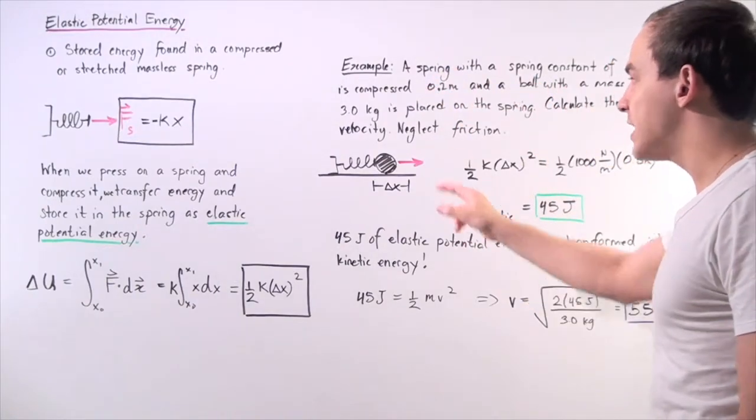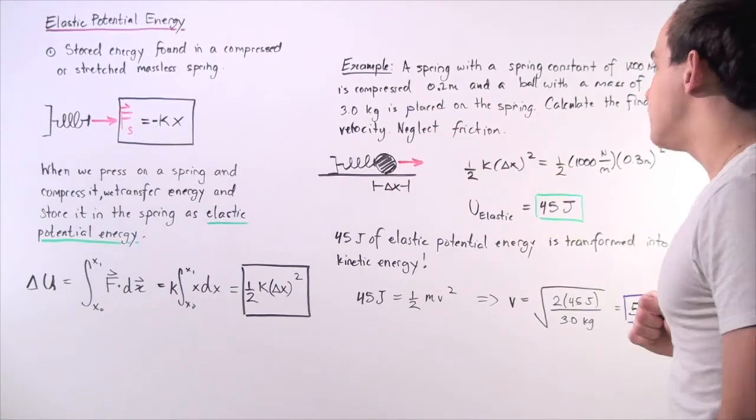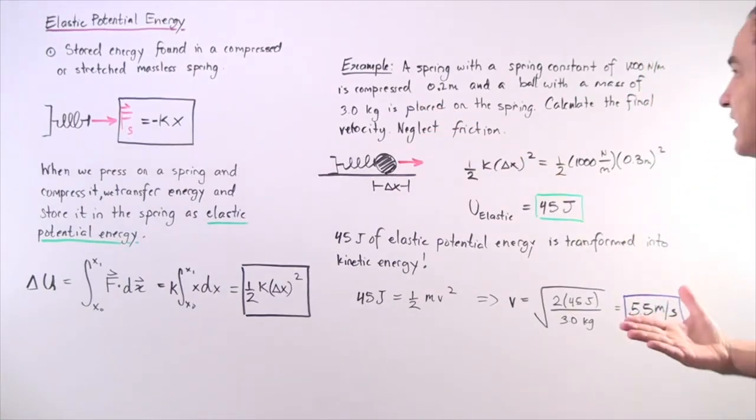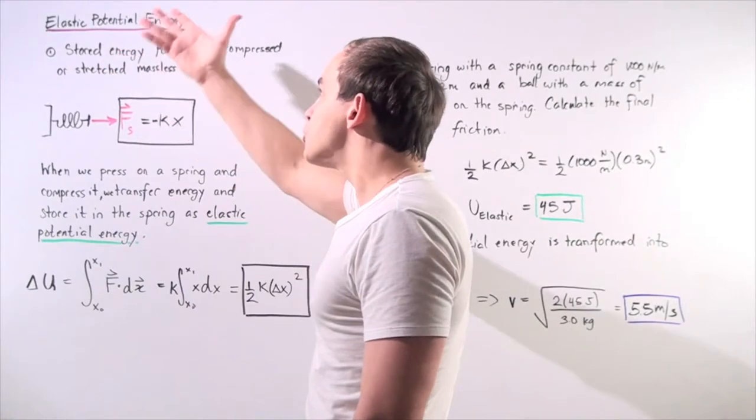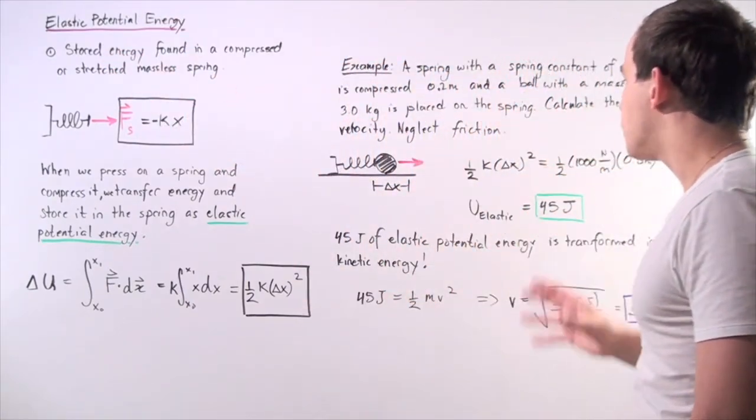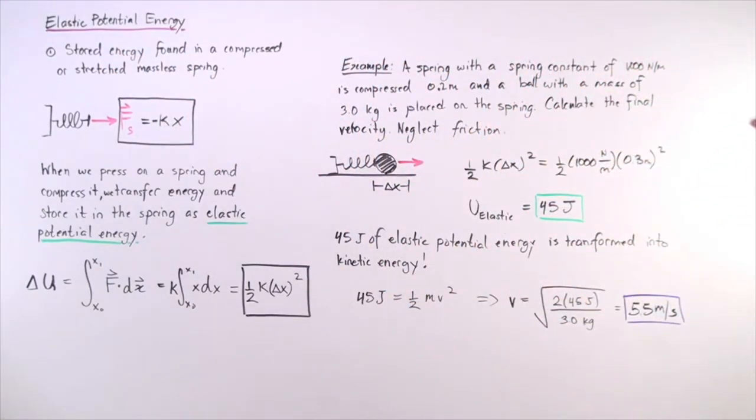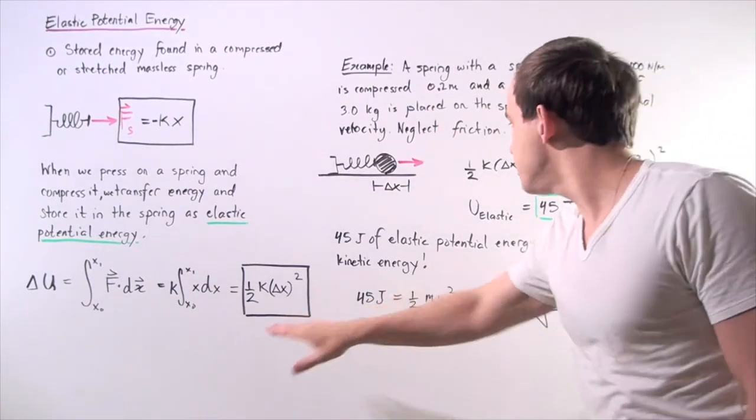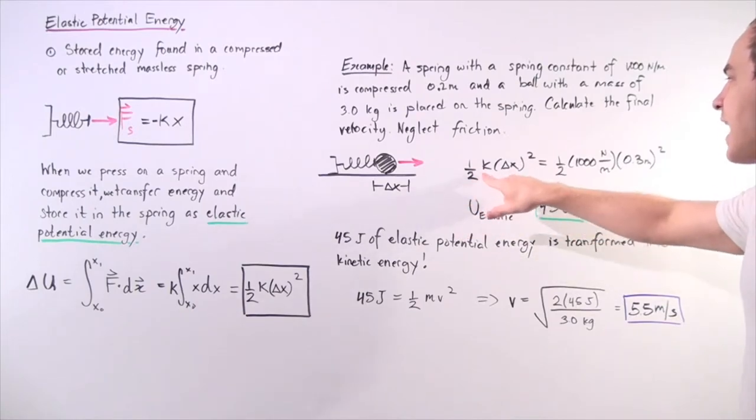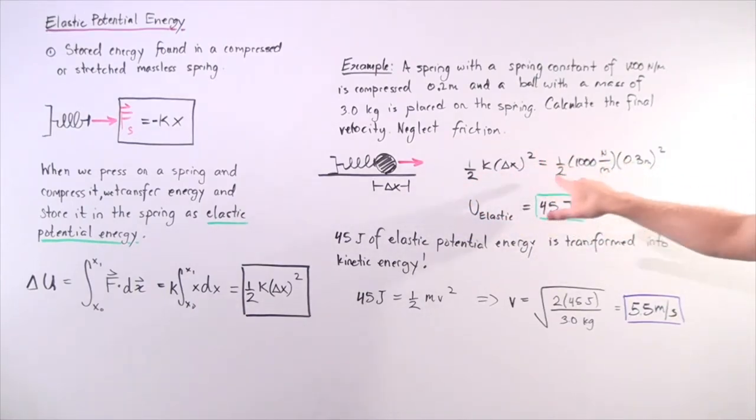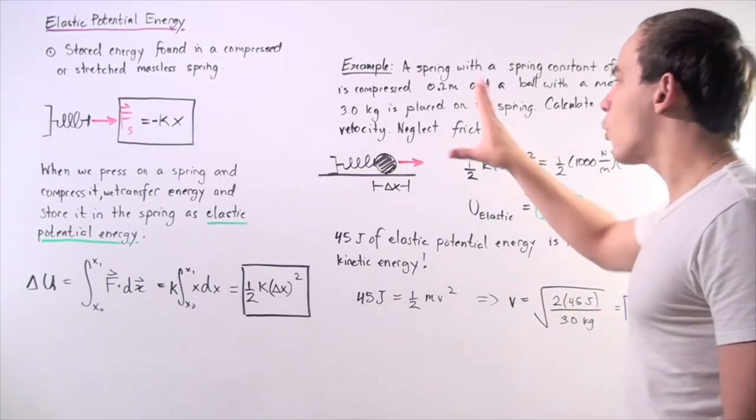We want to calculate the velocity of the object. Let's begin by calculating the elastic potential energy stored in this spring, knowing our spring constant and compression distance. We use the formula ½kx² = ½(1000 N/m)(0.3 m)². We find that 45 joules of elastic potential energy is stored in that spring.